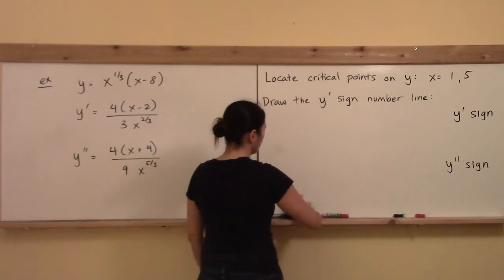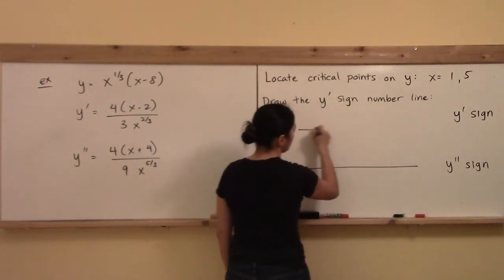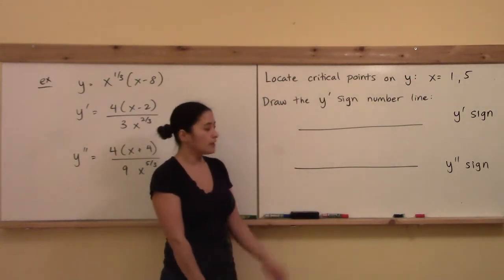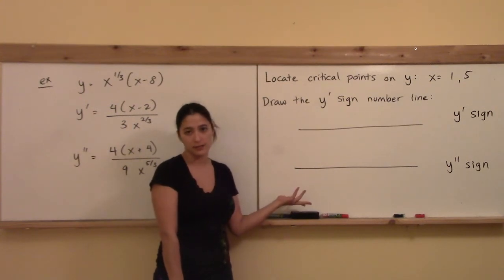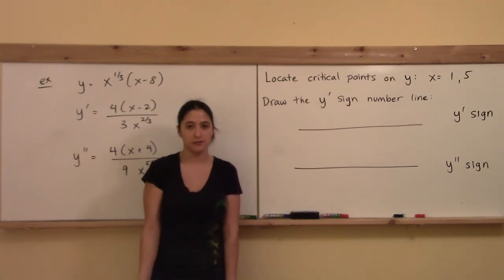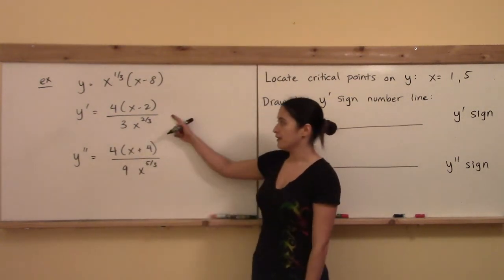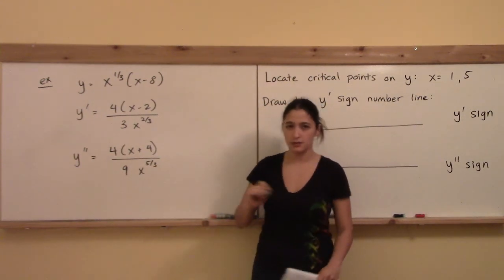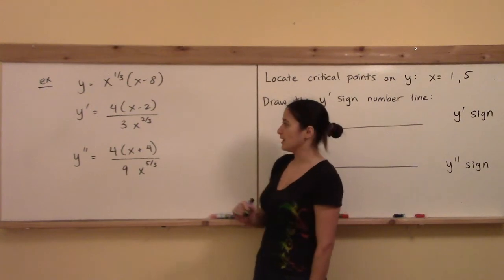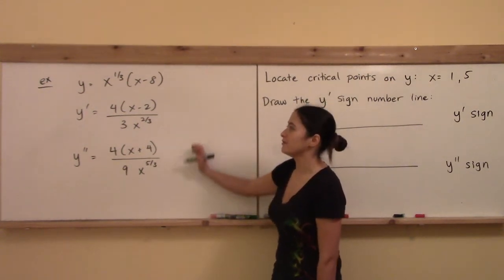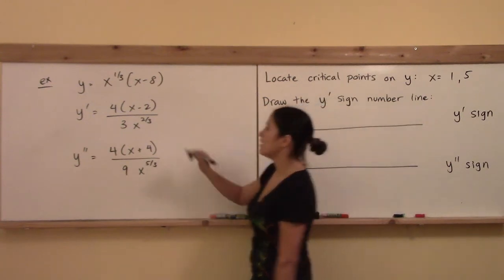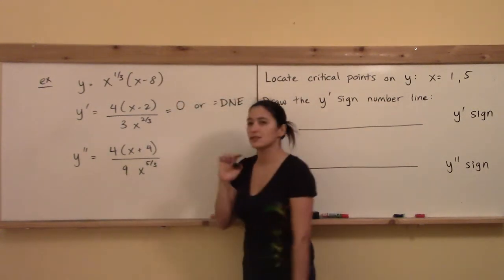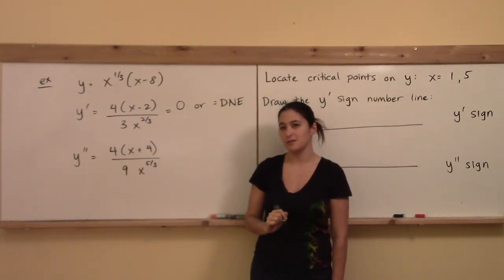As with the previous example, we have to solve for where y' equals zero or does not exist, and where y'' equals zero or does not exist. This example has x's on the bottom of fractions, so we have to be careful about values where things don't exist.